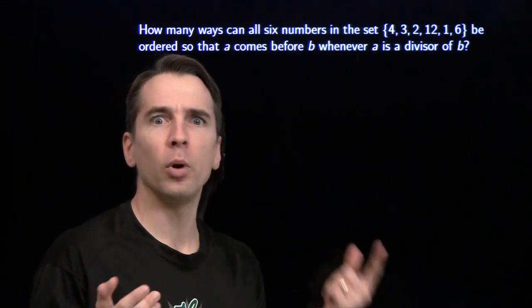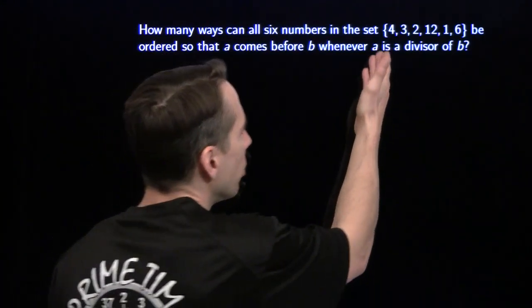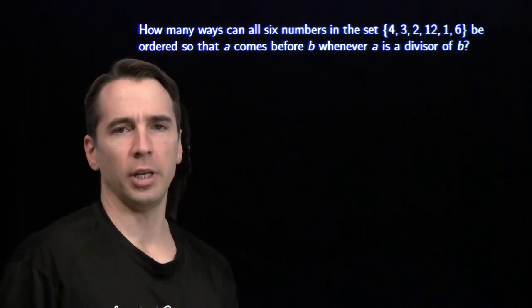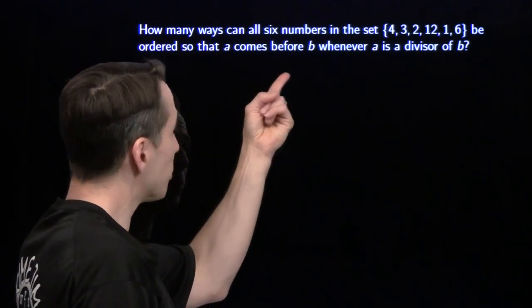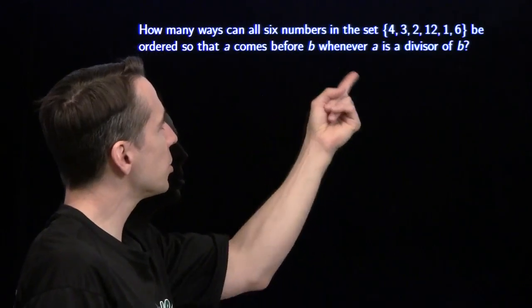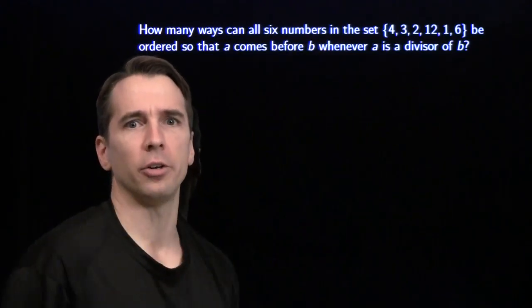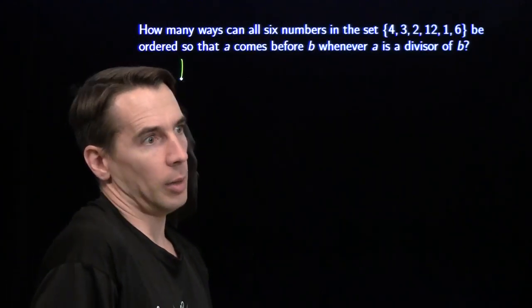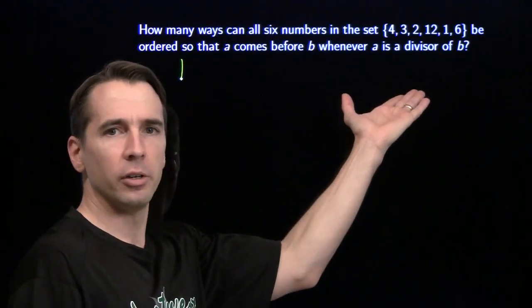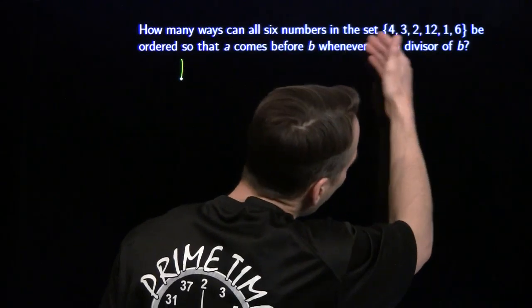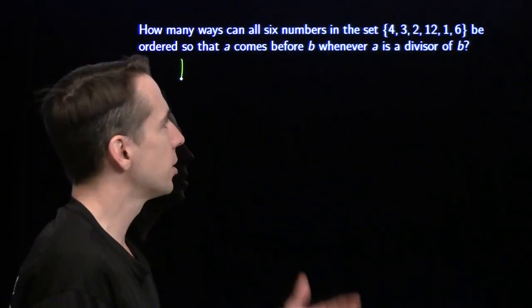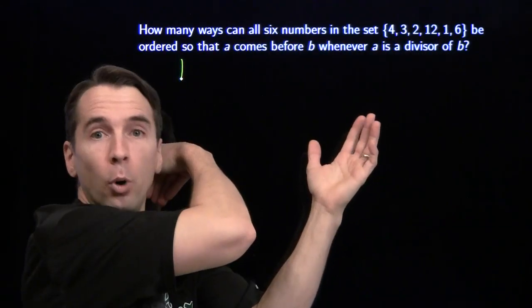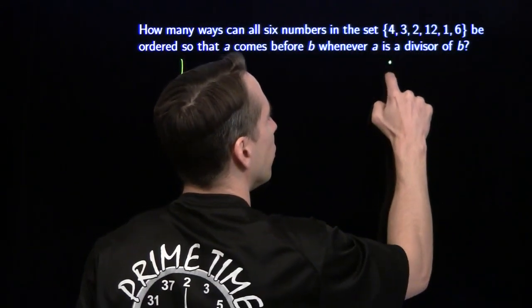We'll start at the beginning. What number comes first? We see that 1 is a divisor of everything else in the list, so 1 comes before all those other numbers. So we know what number comes first — 1 comes first. That might make us think, what's at the other end? Well, 12 is a multiple of everything in this list, so everything in this list has to come before 12. So 12 is at the other end.